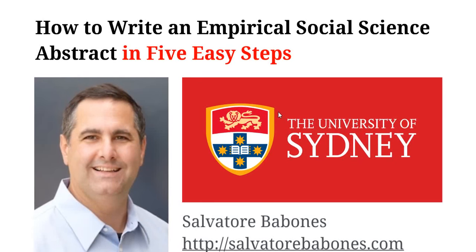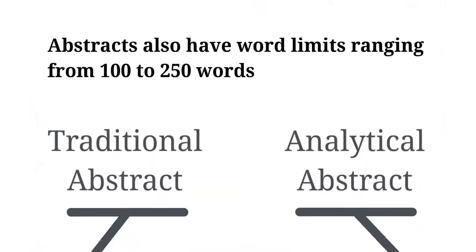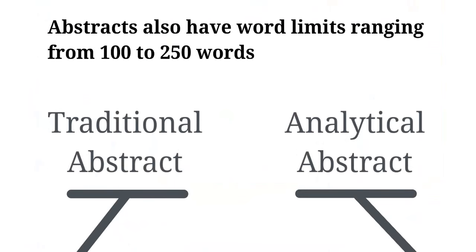Hi, I'm Salvatore Babonis, and today's video is How to Write an Empirical Social Science Abstract in 5 Easy Steps. Abstracts have word limits ranging from 100 to 250 words, and often you'll be asked just to write something that summarizes the article in that length, and it can be difficult to decide exactly what to write.